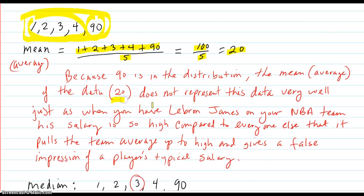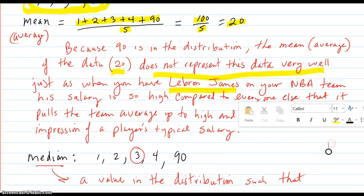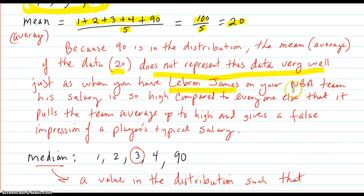So 20 doesn't represent the data very well, just as when you have LeBron James on your NBA team. He's one of the best or the best basketball player in the world right now.